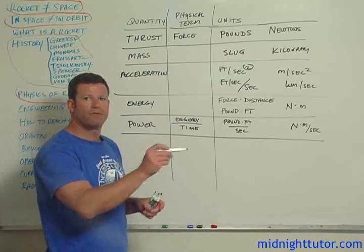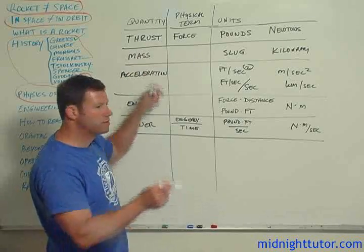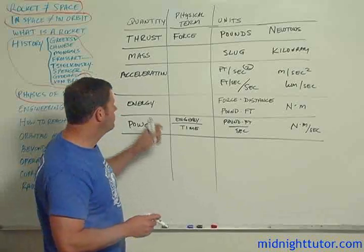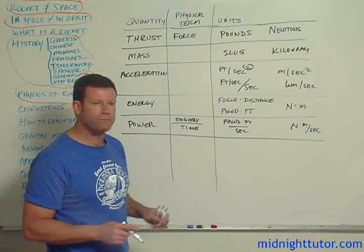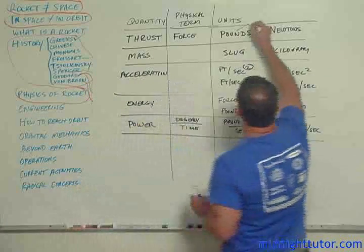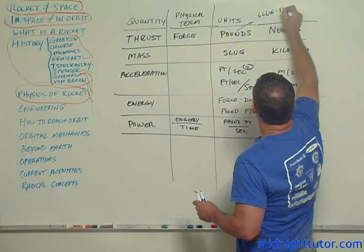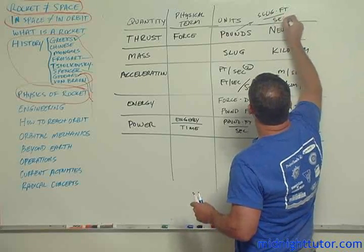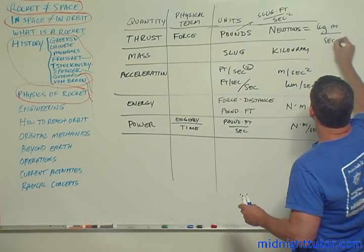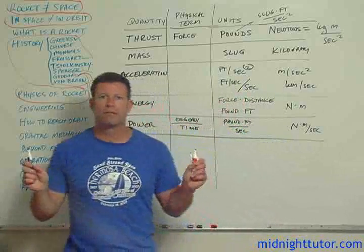So these things are not interchangeable. Each one has a specific meaning, right? Power is essentially the rate of change of energy. Energy is how much force it takes to move something and how far we've moved it. Acceleration is how fast the velocity is changing. Mass is an intrinsic property. And then thrust is the force, which is how much mass can we accelerate. So a pound then, right? So a pound then is equal to a slug foot per second squared. Or a Newton is equal to a kilogram meter per second squared. So that's how those things all tie out. So try to use the correct term.